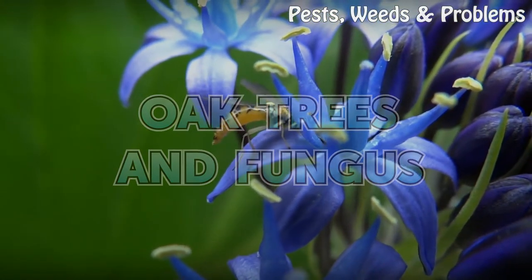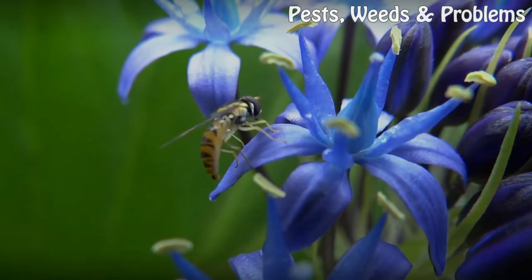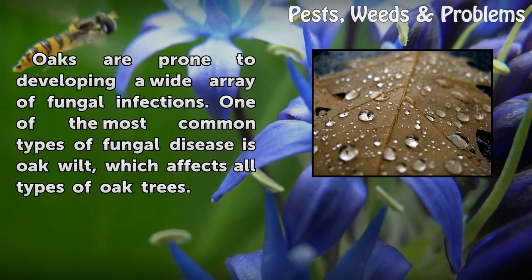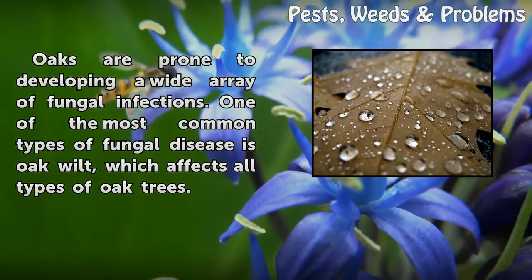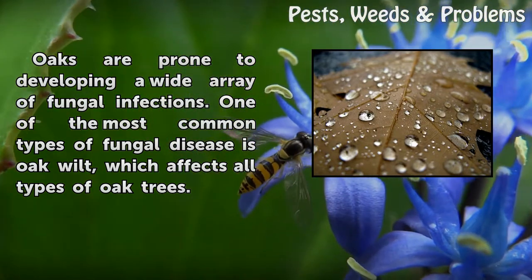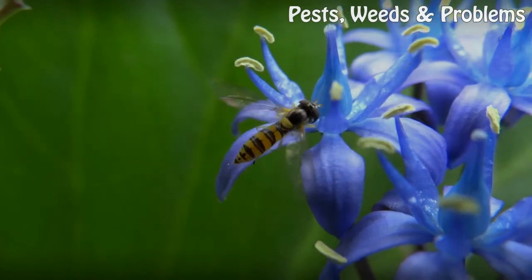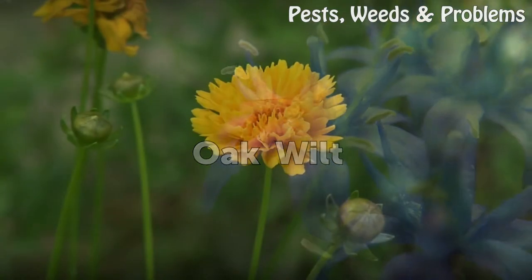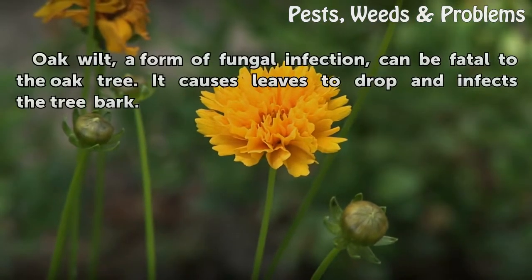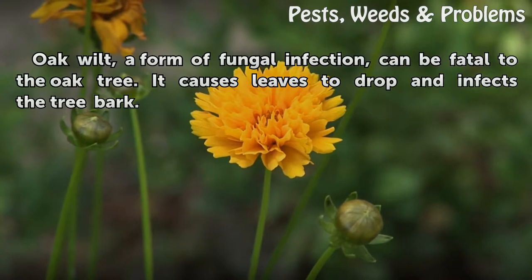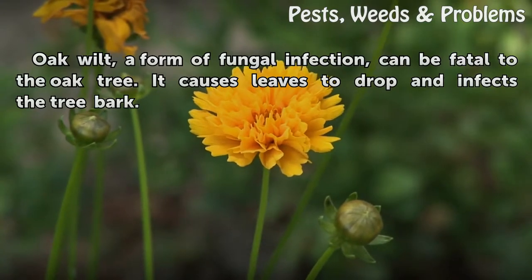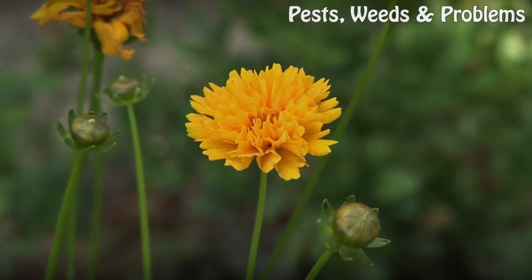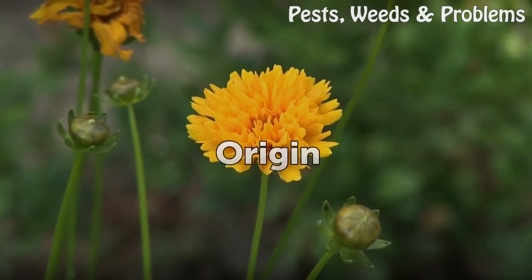Oak trees are prone to developing a wide array of fungal infections. One of the most common types of fungal disease is oak wilt, which affects all types of oak trees. Oak wilt, a form of fungal infection, can be fatal to the oak tree. It causes leaves to drop and infects the tree bark.